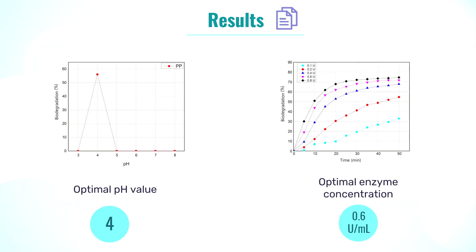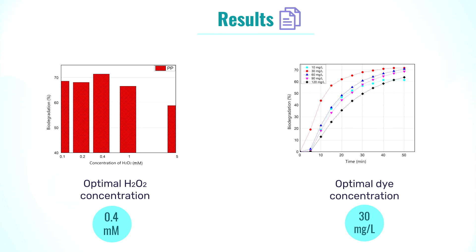On the first picture, we see that in the range from pH 3 to 8 of the reaction mixture, the enzyme reached its optimal activity under pH 4. The second picture shows that the degree of dye decolorization increases with higher enzyme concentration; however, the optimal enzyme concentration was determined to be 0.6 units per milliliter in order not to waste enzyme quantity for small changes in biodegradation rate. The determined optimal concentration of hydrogen peroxide was 0.4 millimolars, as that concentration gave the highest biodegradation rate. On the fourth picture, we see that biodegradation rate was more than 70% with the dye concentration of 30 mg per liter.